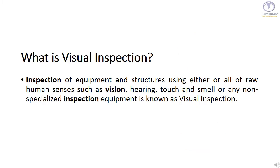We will start with: what is visual inspection? Inspection of equipment and structures using either or all of the raw human senses such as vision, hearing, touch, and smell, or any non-specialized inspection equipment, is known as visual inspection.